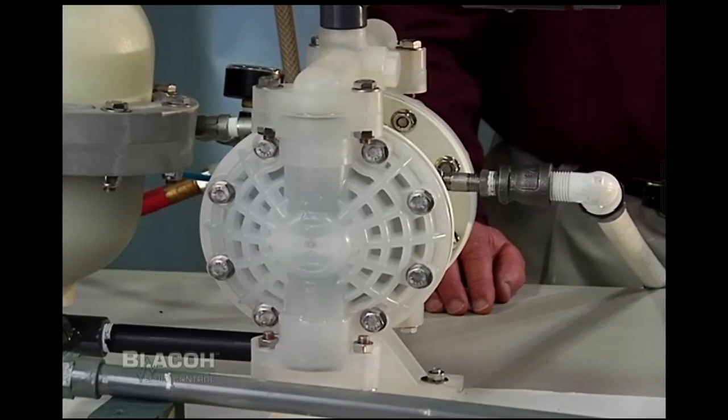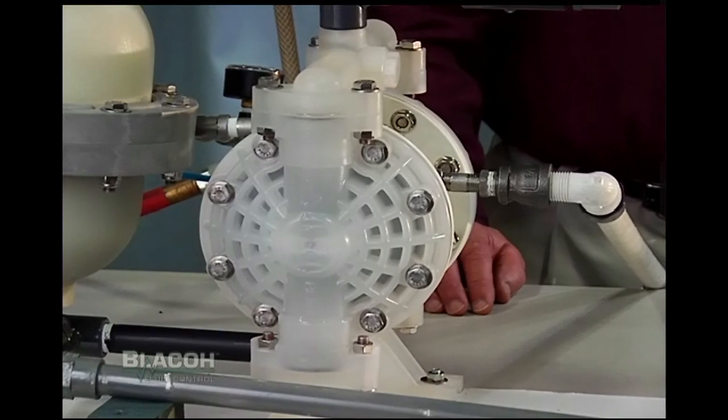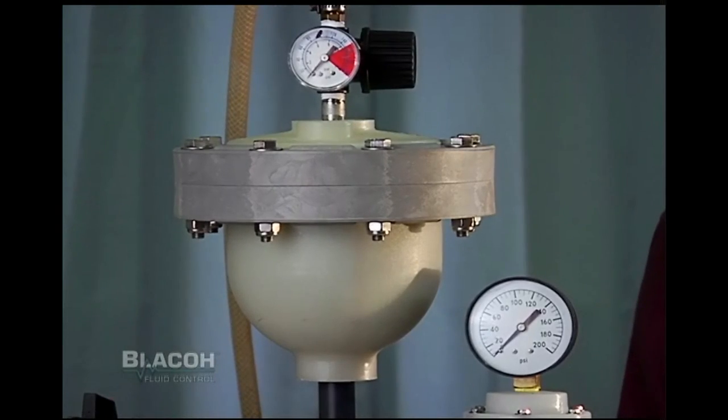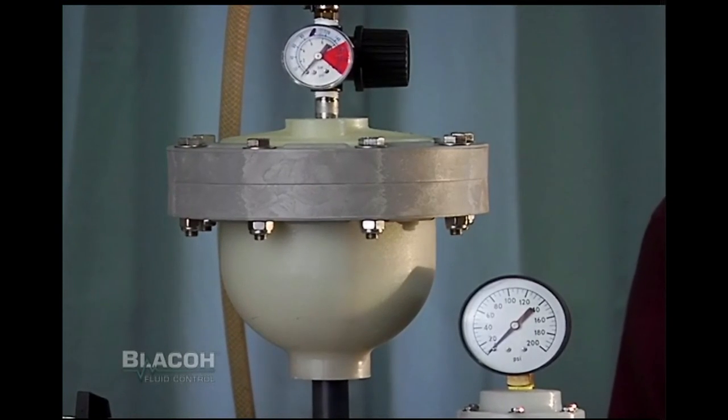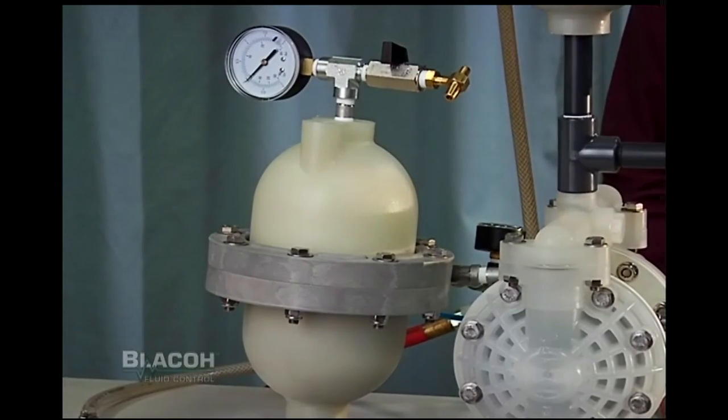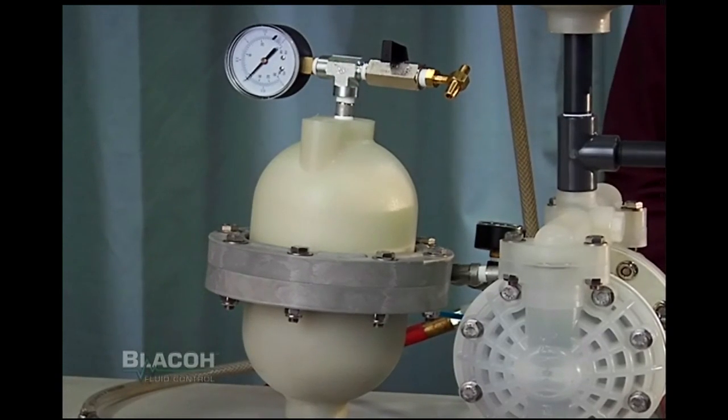This first demonstration is comprised of a half-inch air operated double diaphragm pump fitted with a Blaco pulsation dampener with the adjustable air control on the pump discharge. On the inlet side is a Blaco inlet stabilizer fitted with the J air control.